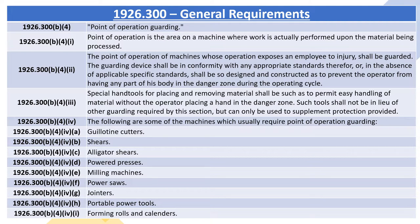1926.300(b)(4)(iii): Special hand tools for placing and removing material shall be such as to permit easy handling of material without the operator placing a hand in the danger zone. Such tools shall not be in lieu of other guarding required by this section but can only be used to supplement protection provided. 1926.300(b)(4)(iv): The following machines usually require point of operation guarding: guillotine cutters, shears, alligator shears, powered presses, milling machines, power saws, jointers, portable power tools, forming rolls, and calendars.